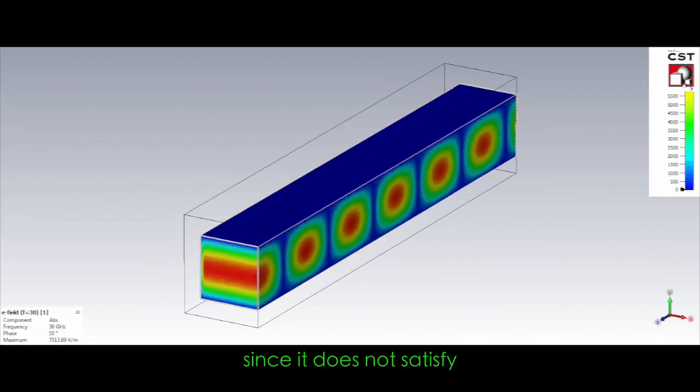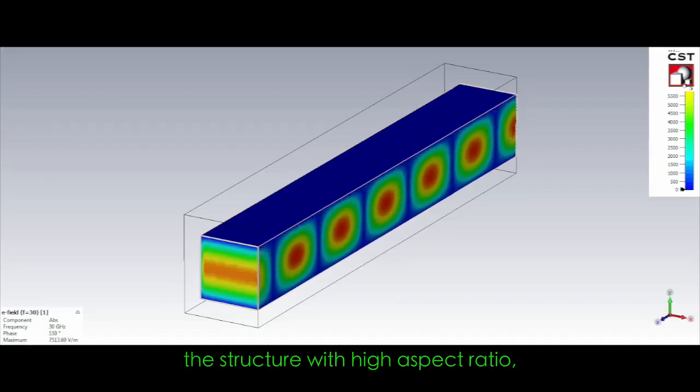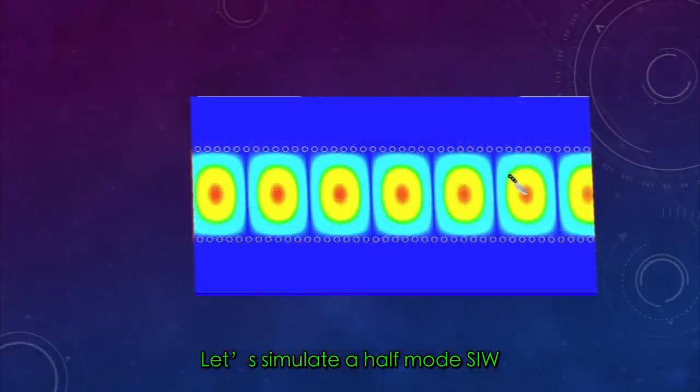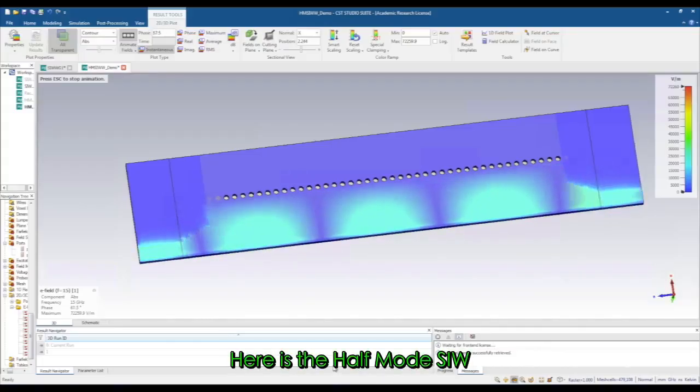Since it does not satisfy the structure with a high aspect ratio, the dominant mode has been changed. Let's simulate a half mode SIW which is made by cutting the SIW we simulated in last video.